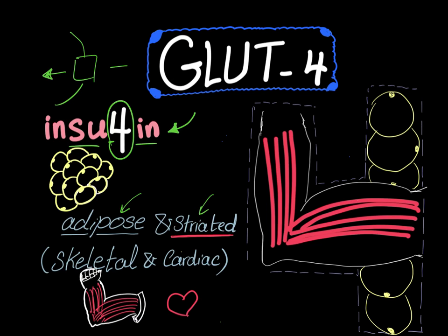The tissues that need insulin the most are adipose tissue and striated muscles, including skeletal and cardiac. That's why people who are obese have an increased probability of being diabetic — when you have a lot of adipose tissue, you need a lot of insulin that your pancreas cannot keep up with.